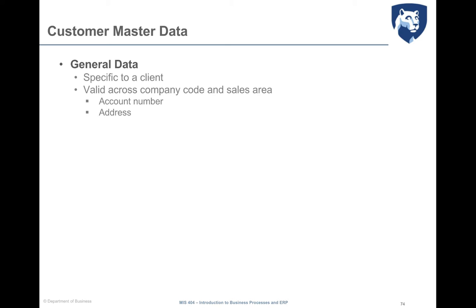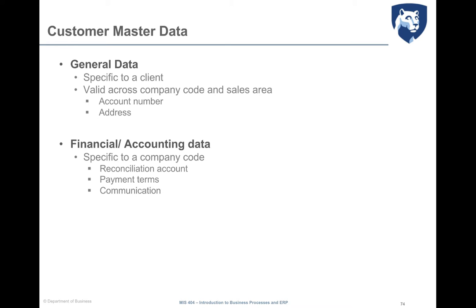Examples of general data are the customer's name, address, and account number. Financial and accounting data, instead, are specific to a company code and include data such as payment terms, reconciliation accounting, the general ledger, and communication methods.